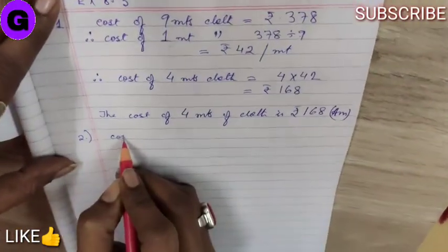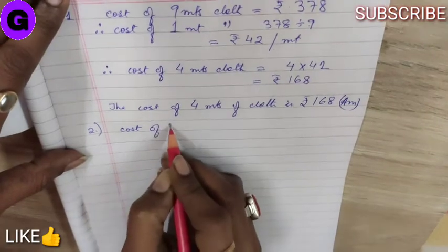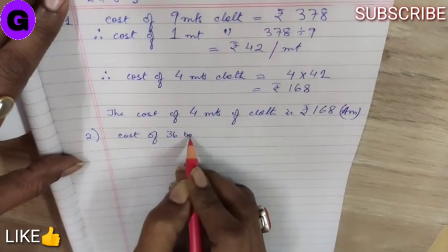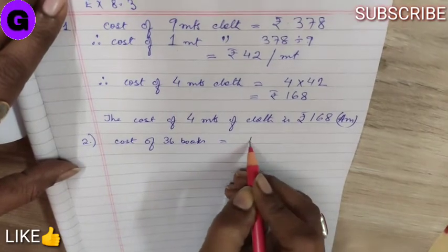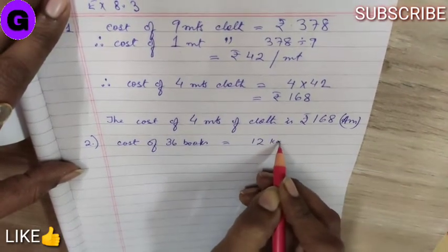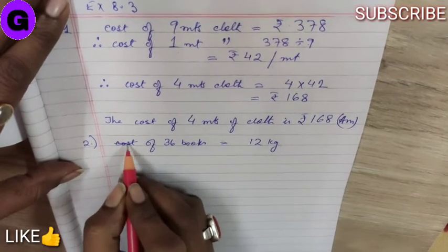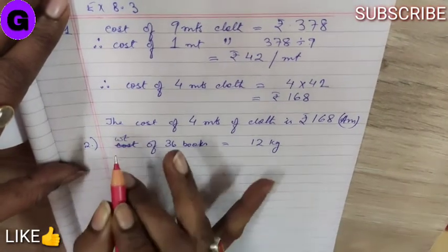So, let us frame the statement. Cost of 36 books is equal to 12 kg. Sorry friends, I made a mistake. It will be weight of. I am extremely sorry.